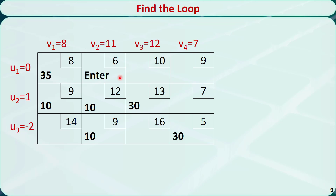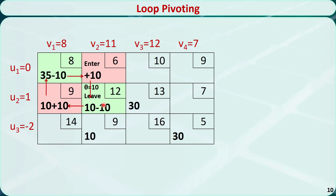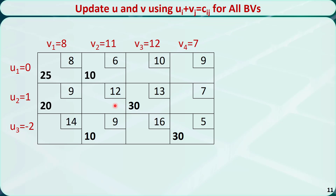Now let's find a loop. The only loop in this basic feasible solution is this one. Starting from the entering variable, we count 0, 1, 2, 3, and 0. We mark odd cells in green and even cells in red. We find the smallest value among all the odd cells, which is 10. We give this value to theta — this will be the leaving variable. We decrease odd cells by theta and increase even cells by theta. This is the new basic feasible solution after the loop pivoting.